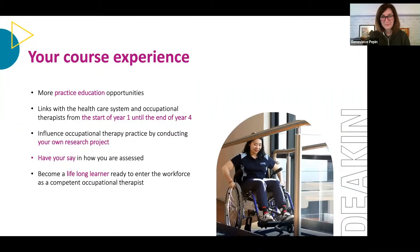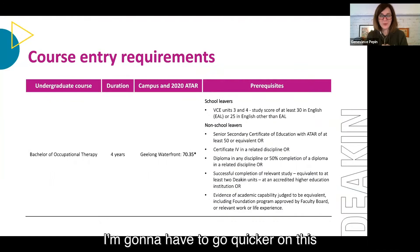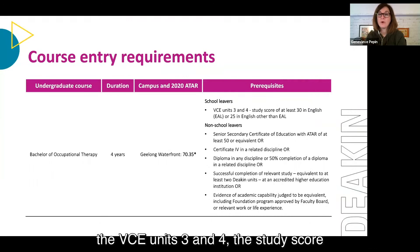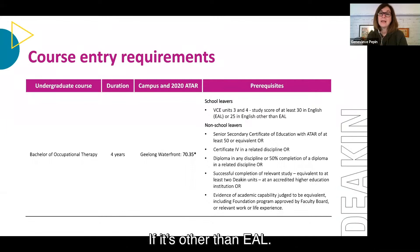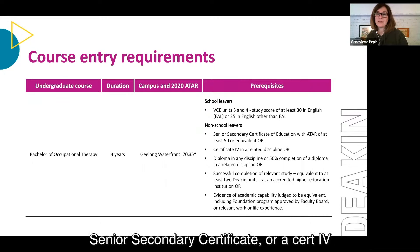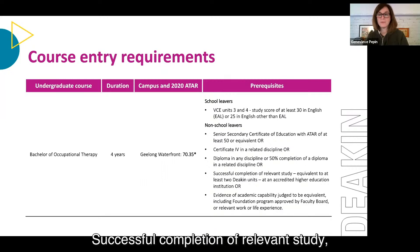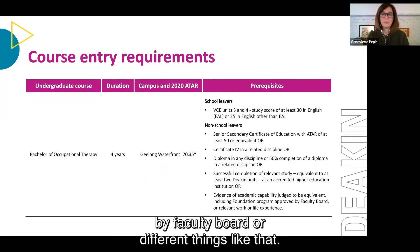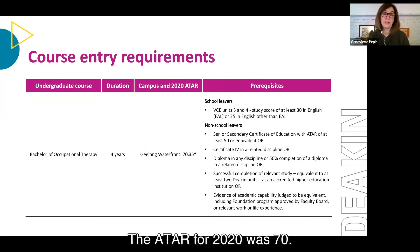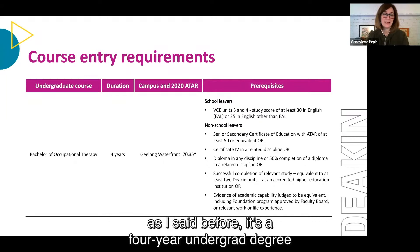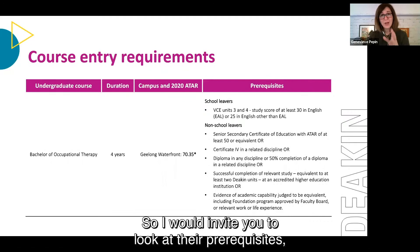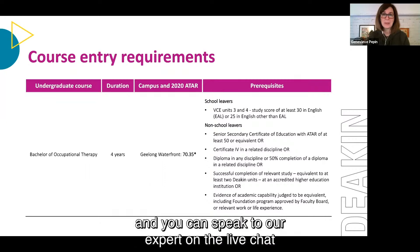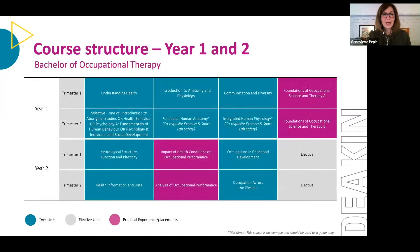The course entry requirements: specific prerequisites for school leavers are VCE units 3 and 4 with a study score of at least 30 in English, or 25 if it's English as an Additional Language. For non-school leavers there are several pathways including a senior secondary certificate, diploma, successful completion of relevant study, or evidence of academic capability through a faculty-approved foundation program. The ATAR for 2020 was 70, though this varies year to year. I'd invite you to look at the prerequisites in detail and speak with our expert on the live chat if you have questions.